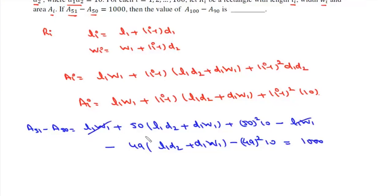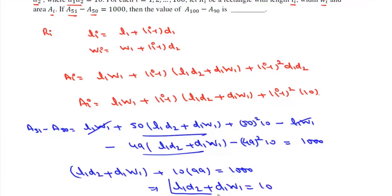Now L1W1 will cancel. 50 minus 49 is 1 so it will be L1D2 plus D1W1 plus, now here we take 10 common and this is a square minus b square which is a plus b into a minus b, so it will be 10 into 99. This is equal to 1000. Now 1000 minus 990 is 10.